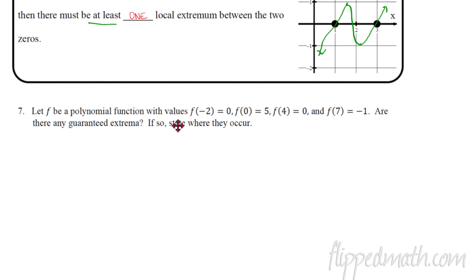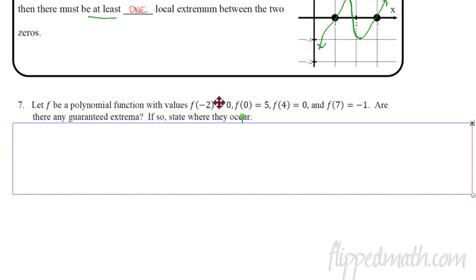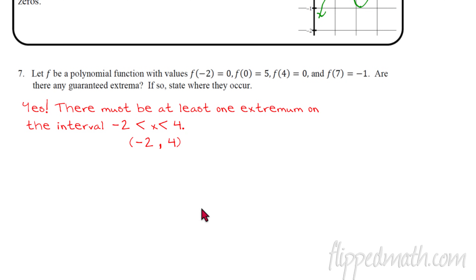Here's an example using function notation. If we have a polynomial function f where f of negative two is zero, f of zero is five, f of four is zero, and f of seven is negative one — are there any guaranteed extrema? We find the zeros: x equals negative two and x equals four. Note that f of zero equals five is a y-intercept, included to throw you off. Between x equals negative two and x equals four, there must be at least one extremum. We write that using inequality notation or as an interval.